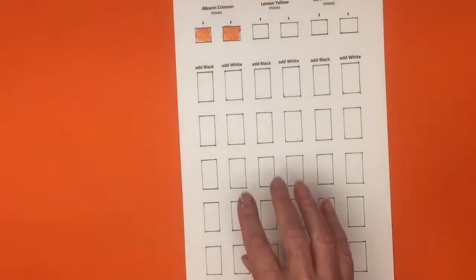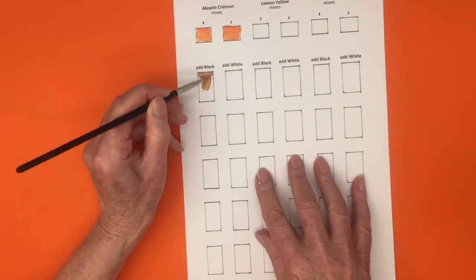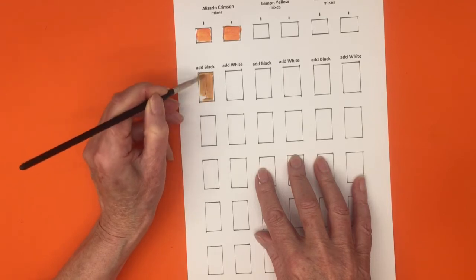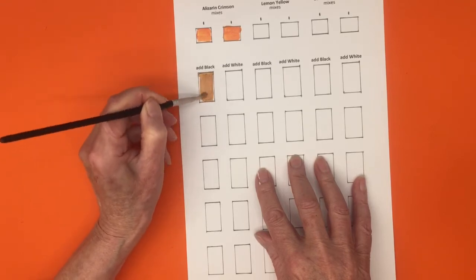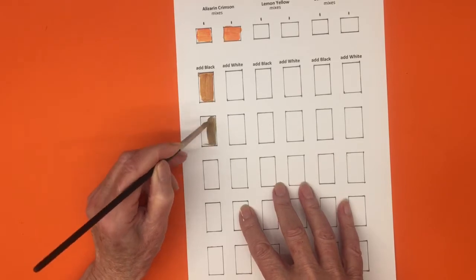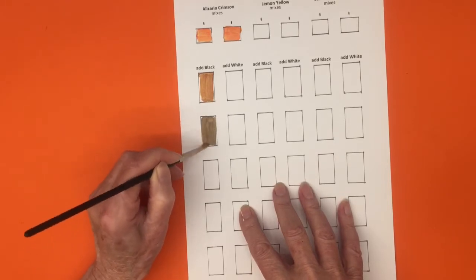Now gradually add black to your mix. Be very careful with black as it's very powerful. Carry on down adding more black until you get to the last box which should be painted pure black.